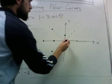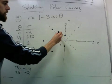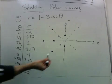When we have 7 pi over 4, we get negative 1.12. And then at 2 pi, we're back to negative 2.